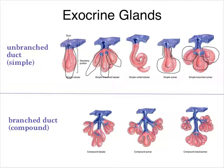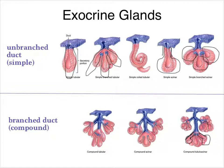Here we see the same compound arrangement, except these are roundish acinar portions rather than longer tubular ones. Again, multiple ducts connect together, making it compound acinar. The tubuloacinar glands often look goblet-shaped — with a long bit connected to a round bit at the end — rather than just being long and skinny or just being round. So these look kind of like flasks or vases.